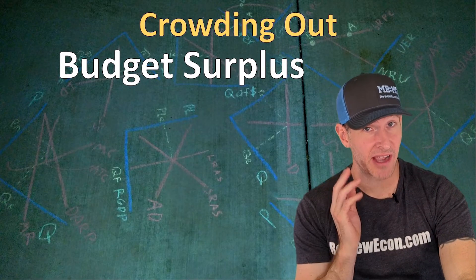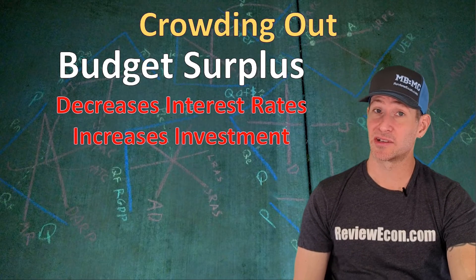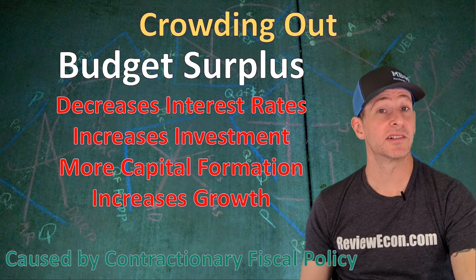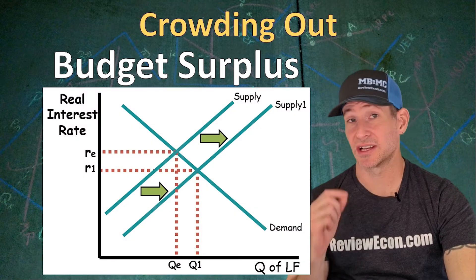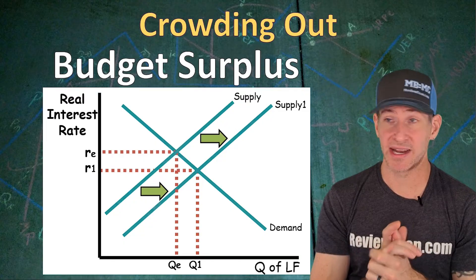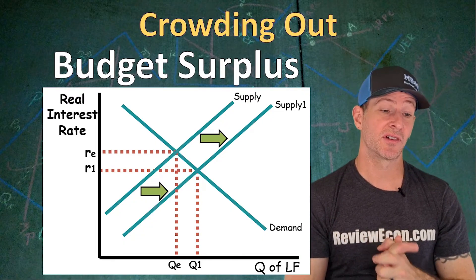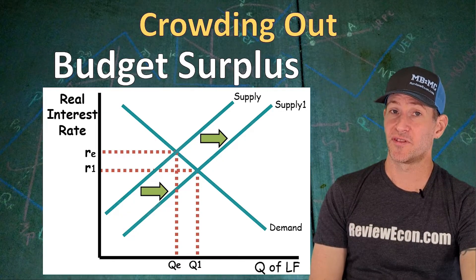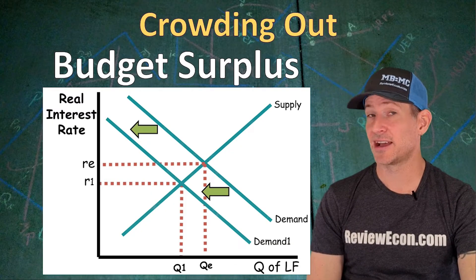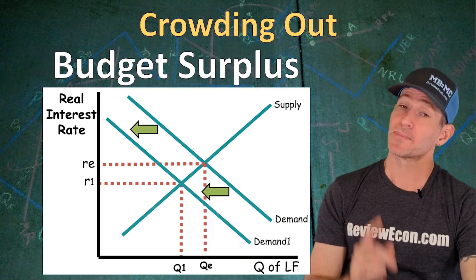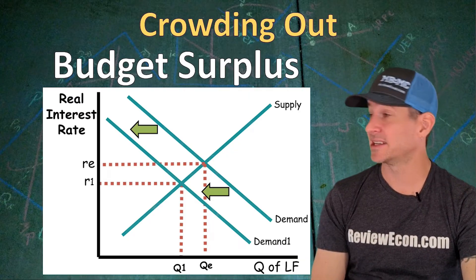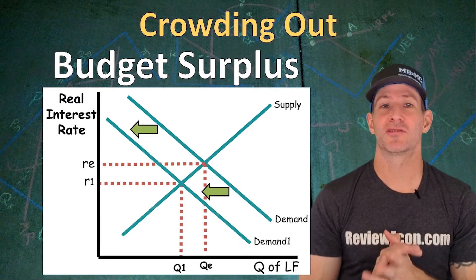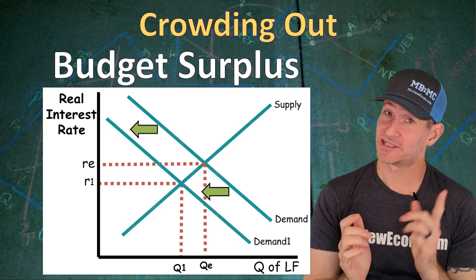If we have a budget surplus, we're going to have the opposite of crowding out occur — a decrease in interest rates and an increase in gross investment, meaning more capital formation and faster economic growth. This increased economic growth can be caused by contractionary fiscal policy. On the loanable funds graph, you can either increase the supply of loanable funds because the government isn't borrowing as much money, leaving more private supply for businesses, which leads to a decrease in the real interest rate and an increase in the quantity of loanable funds and greater gross investment. Or instead of moving the supply curve, you could move the demand curve to the left, meaning less demand for loanable funds. Either way, we're going to see a decrease in the real interest rate and an increase in gross investment. Make sure you don't shift both the supply and demand curve — you have to pick one.